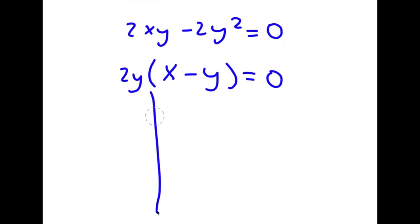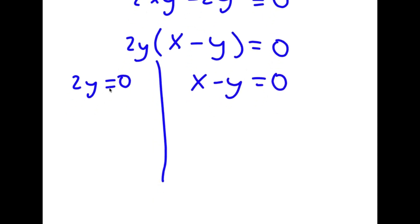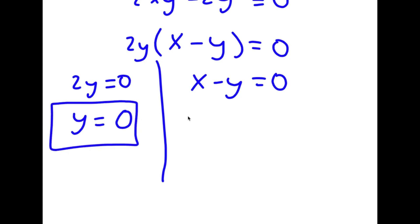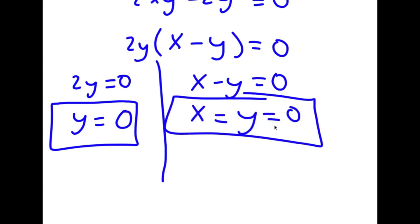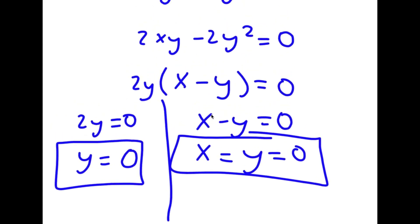This gives me two equations: 2y is equal to 0, and x minus y is equal to 0. For 2y equals 0, y is equal to 0. And if x minus y equals 0, this means x is equal to y. Since y equals 0, x is also equal to 0. So both variables are equal to 0.